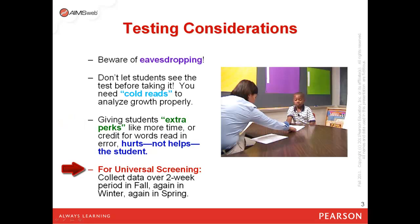During your universal screening, collect your data within a two-week period in the fall, again in the winter, and again in the spring. Extending it beyond a two-week window allows for more growth from one student that was tested to the next and may potentially reduce the benefit of your data.